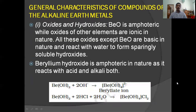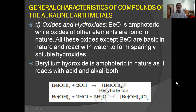General characteristics of compounds of alkaline earth metals: oxides and hydroxides are basic in nature, but beryllium oxide is amphoteric in nature. Amphoteric means it shows the properties of both an acid and an alkali — when it reacts with strong acids it acts as a base, and when it reacts with strong bases it acts as an acid. Oxides and hydroxides of beryllium are amphoteric, while oxides of other elements are ionic and basic.